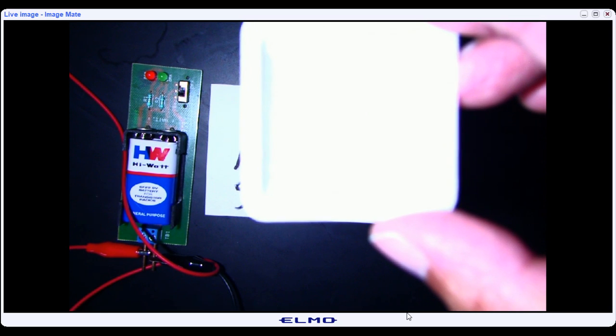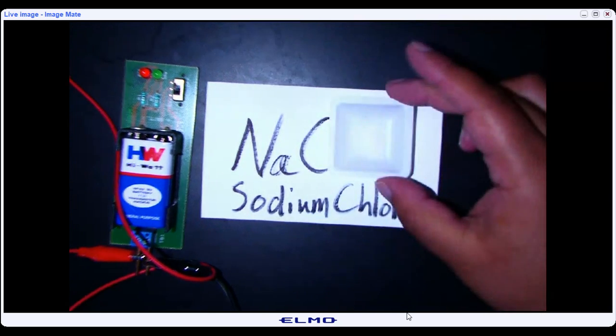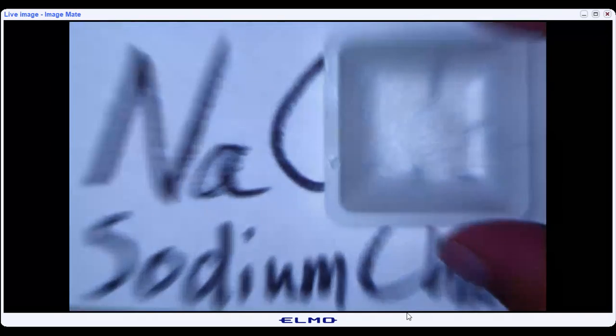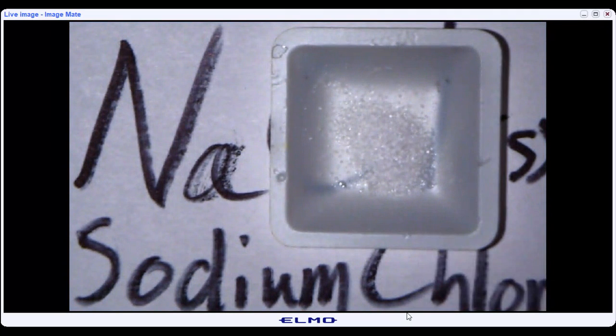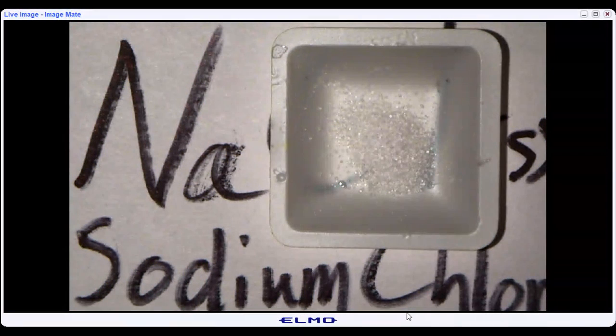So if we look at it under the Elmo, we can see that similar to the sucrose, it is a white or clearish looking solid.